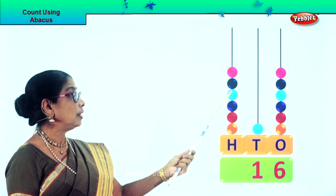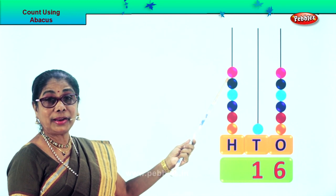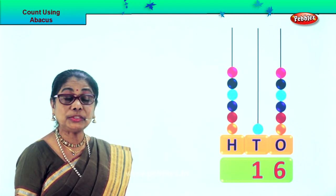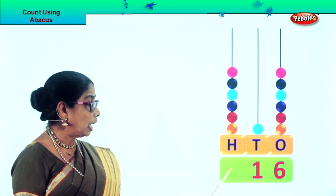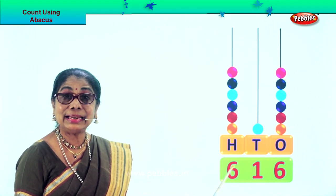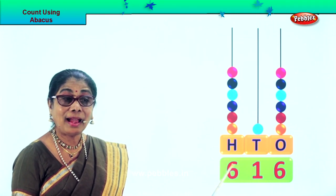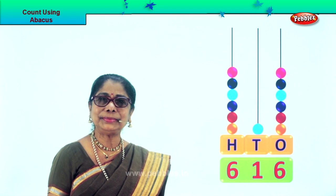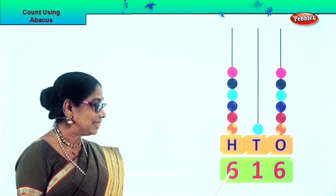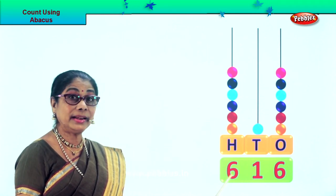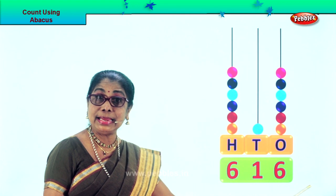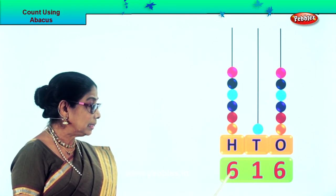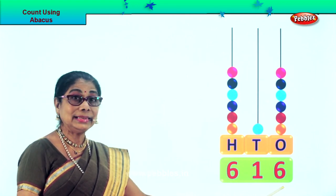4 hundreds, 5 hundreds. There are 6 beads — we put down 6, that is 6 hundreds. Now we'll read the number together: 616. What is the number? 616.